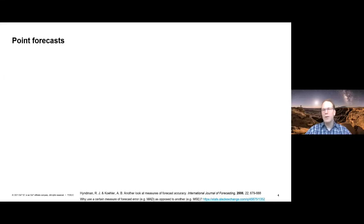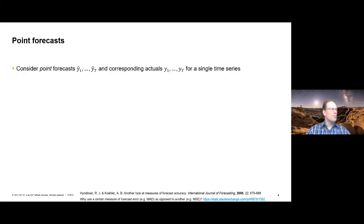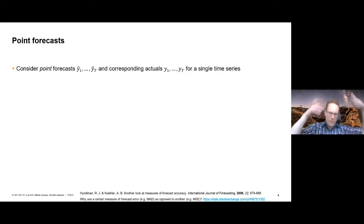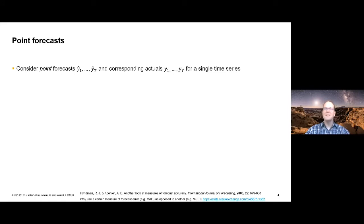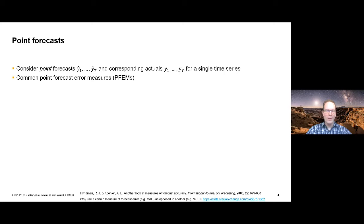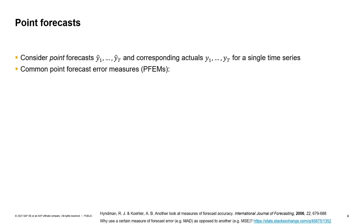Let's talk about point forecast evaluation. What are point forecasts? The idea is that we have a time series with actuals we would like to forecast, and we have a single point forecast for each actual. For example, tomorrow's temperature is going to be 37 degrees Celsius — that's probably a little hot for this time of year. It's not an interval, it's not a density. It's just a single number we hope is a good forecast. There is a bewildering variety of point forecast error measures, and I'll use the acronym FEMs from now on because it's simply less of a mouthful.